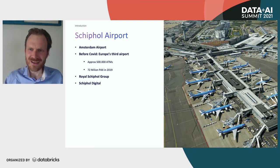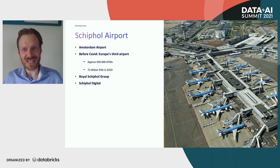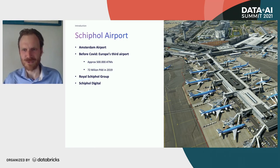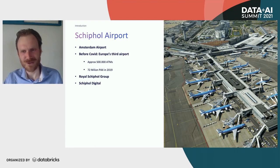Before we dive into the content, I'd like to give you a bit of background on what we're actually doing at Schiphol. You may be familiar with Schiphol — it's a large airport in Europe. Before COVID hit, it was the third largest airport in Europe in terms of passenger numbers. If you travel to Asia, Australia, or somewhere else around the world, you might have transferred at Schiphol. In 2019, before COVID, we handled around 72 million passengers.